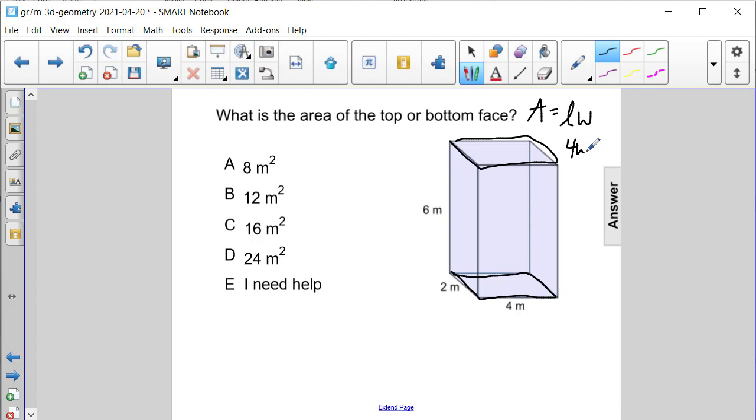So we are going to multiply 4 meters times 2 meters. And when we do so, we're going to get that the final area of the top or the bottom, so one of these faces, is equal to 8 square meters for answer choice A.